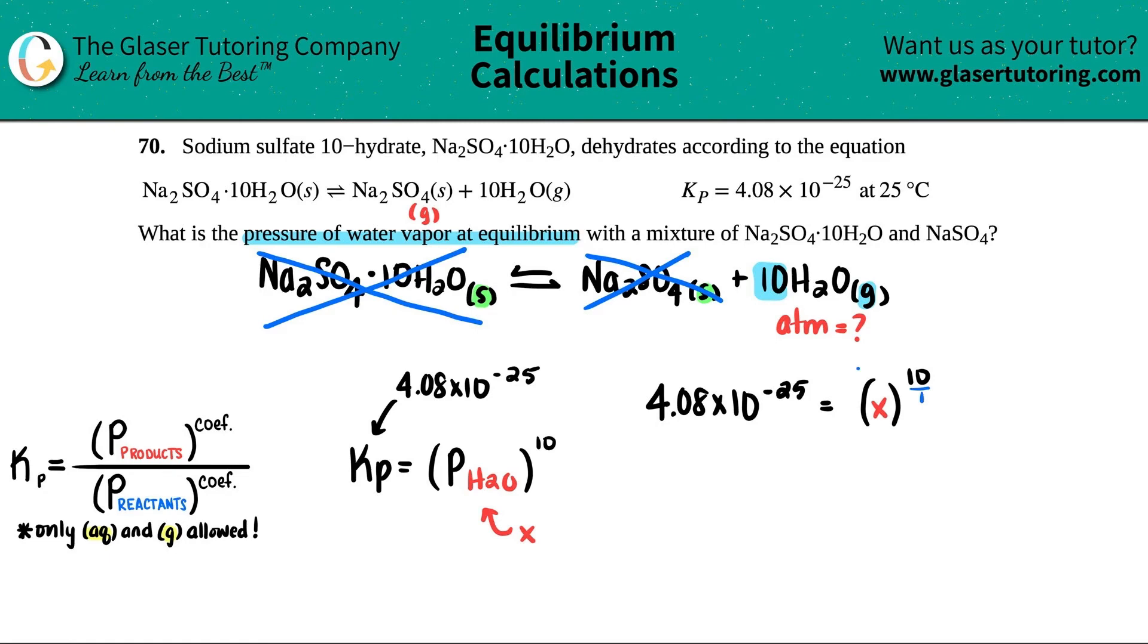Look what happens: the 10s cancel out because when you have the same number on a numerator and denominator when multiplying, they get canceled. So essentially you just have x equals this raised to the one-tenth, and this I know how to plug into the calculator.